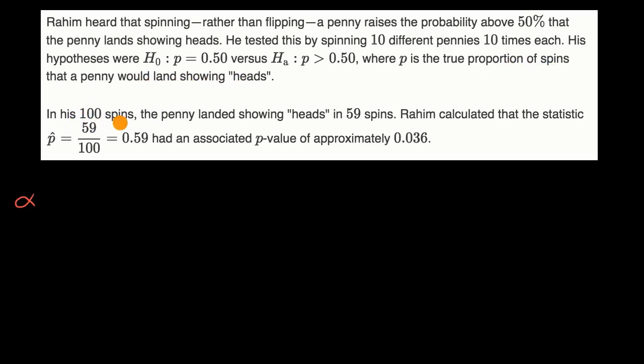In his 100 spins, the penny landed showing heads in 59 spins. Rahim calculated that the statistic, so this is the sample proportion here, it's 59 out of the 100 were heads, so that's 0.59 or 59 hundredths. And he calculated it had an associated p-value of approximately 0.036.